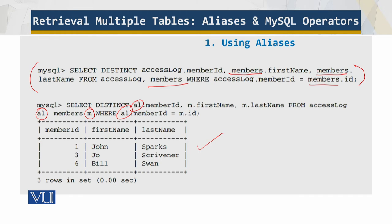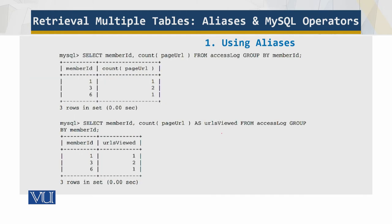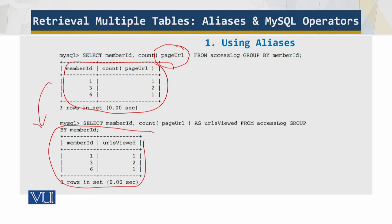Now let's look more about aliases. Notice in this case, the second column in the result is called 'count' and 'page URL'. Not only is this not very descriptive, but you'll find it awkward to refer to in your PHP script. Therefore, it's a good idea to rename this column to something more meaningful. You can see the results are the same, but we have 'URLs viewed' here using the AS keyword for this alias. This makes things simple.